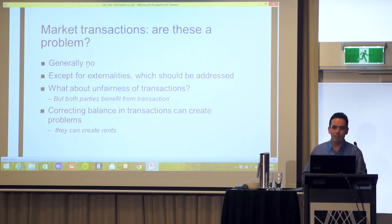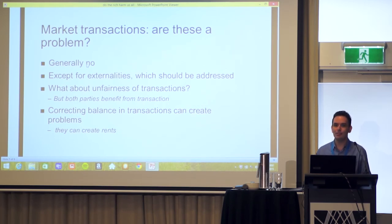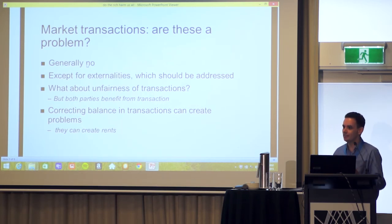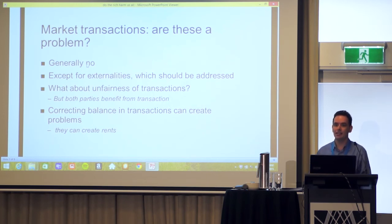Once externalities are fixed, what is the problem? Many people complain about so-called unfairness of transactions — for example, that Walmart pays its staff too little, or that international trade harms farmers in poor nations. But this doesn't make sense, because it's a voluntary transaction, and if it is voluntary then both parties benefit; otherwise they wouldn't enter into it. Correcting so-called imbalanced transactions can itself create problems — like the minimum wage creating unemployment effects, or collective bargaining rules transferring large amounts of money, which could be argued as rents.